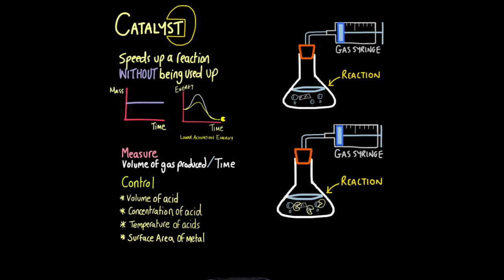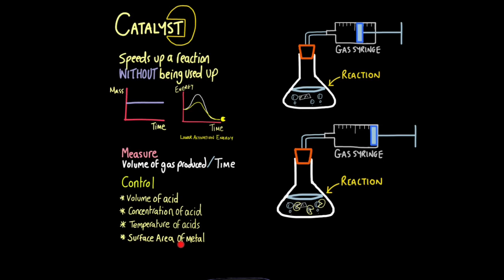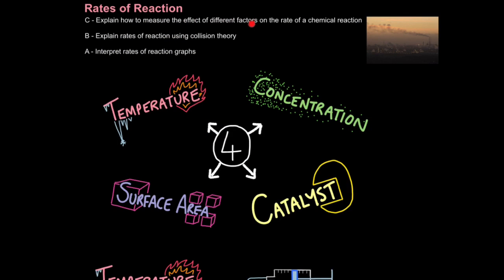Once again we use the gas syringe method. With magnesium and hydrochloric acid, this time we have a catalyst in one of the solutions. As you might expect, the reaction which has the catalyst will be much faster than the reaction without the catalyst. Make sure you control everything else — you are measuring volume of gas produced over time to get a rate of reaction, but you must control the volume of acid, concentration of acid, the temperature of the acids, and the surface area of the metal. Be aware of what you're using before you pick the controls.